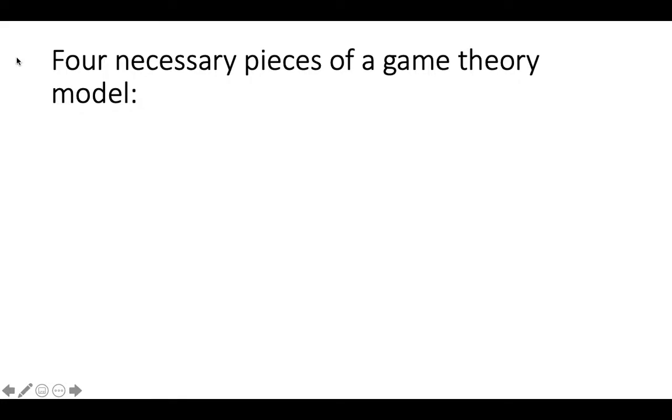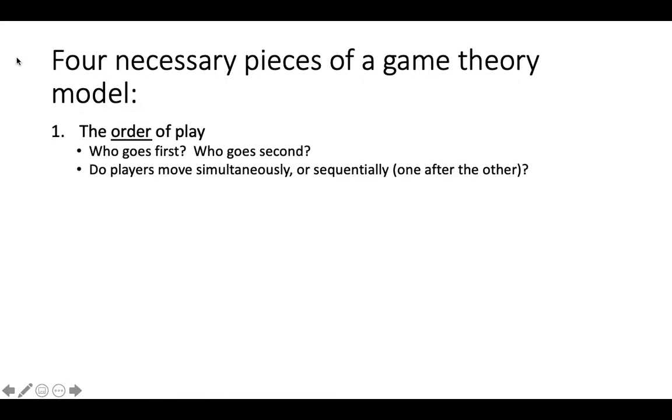In order to fully describe a strategic interaction in a game theory model, we need to know four things. First, we need to know the order of play. Who goes first? Who goes second? Do players move simultaneously or sequentially?